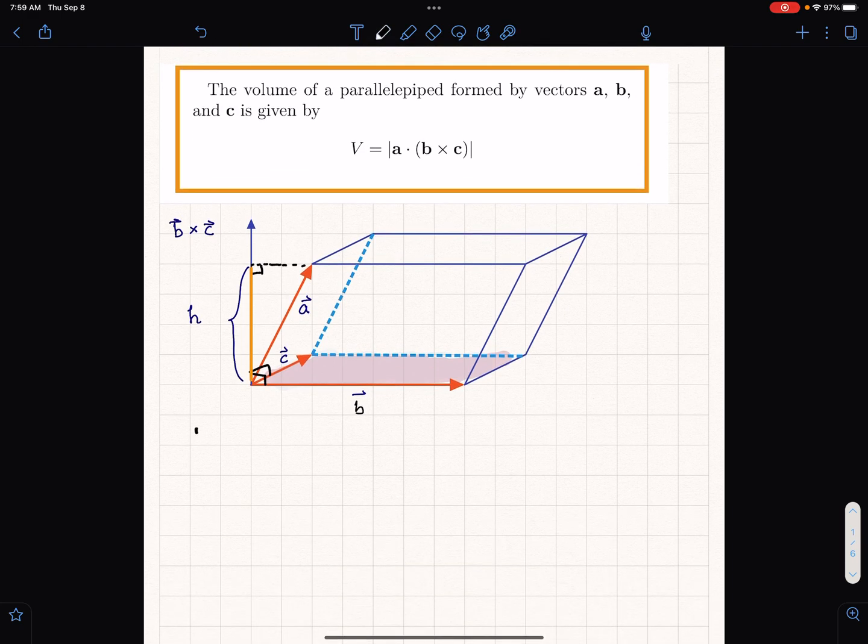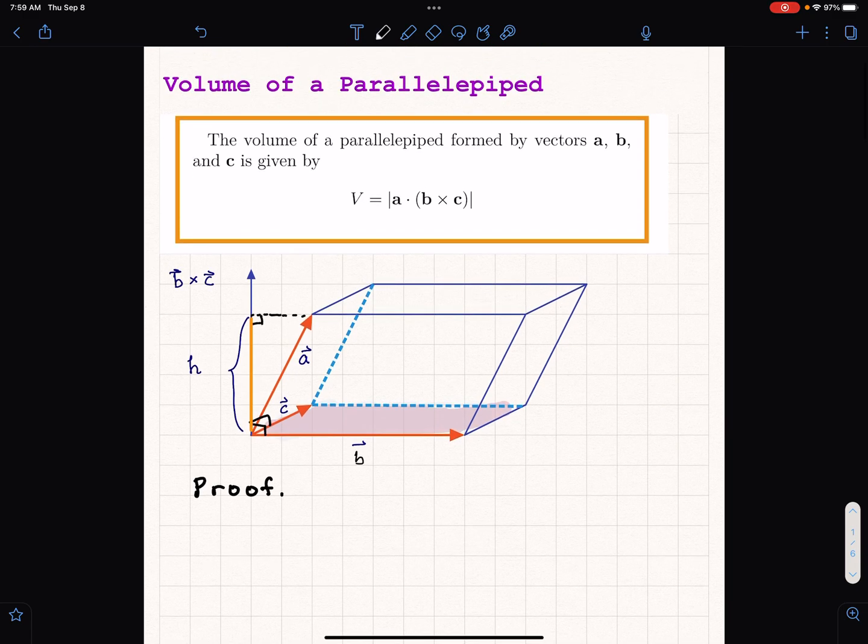Some people say, okay, I don't really want the proof, or maybe I'll read about the proof later in the book. But now I'm going to do the proof that this is, in fact, the volume of the parallelepiped. Let me talk about this a little bit. A dot b cross c is called the triple product.